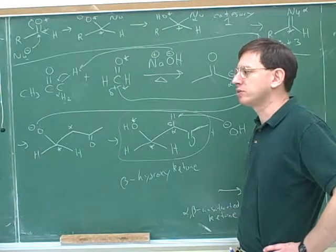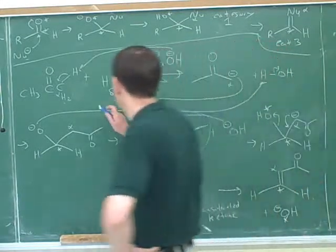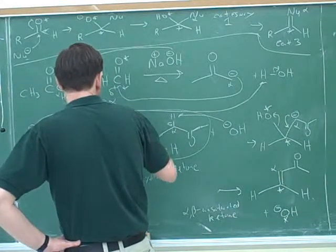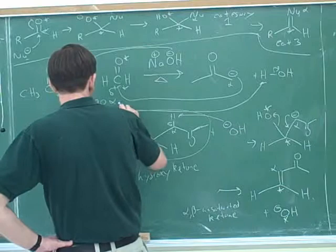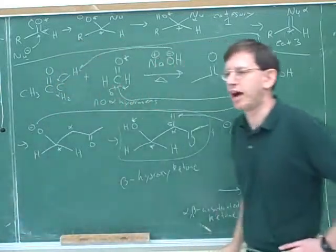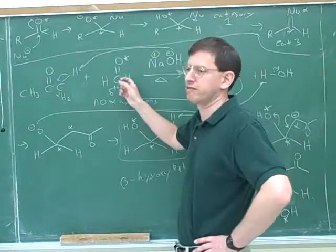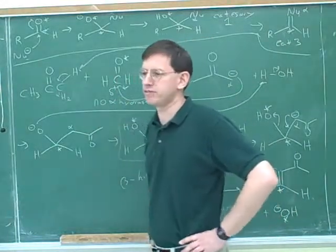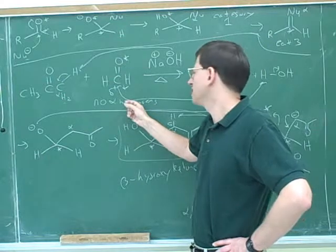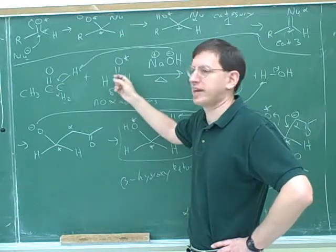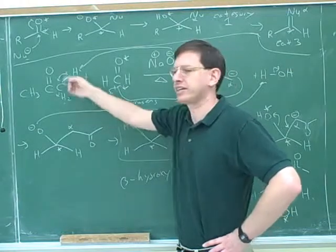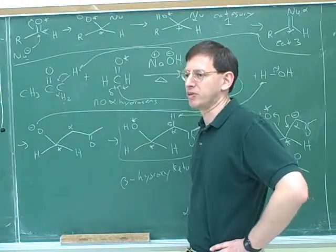First, you should make sure that one of the molecules has no alpha hydrogens. That way you don't need to worry about it forming the enolate — only one of the molecules should form the enolate. And this same molecule, since it doesn't have any alpha hydrogens, you want it to be the electrophile. You need to make sure that it's more electrophilic than the other molecule.